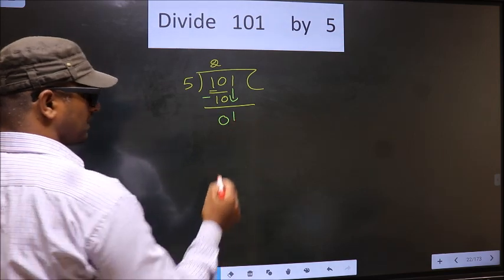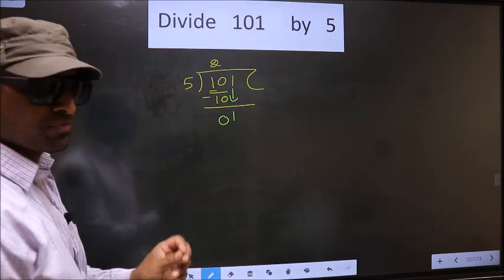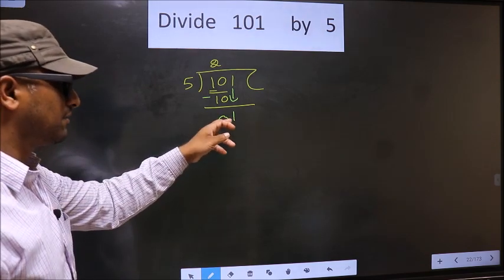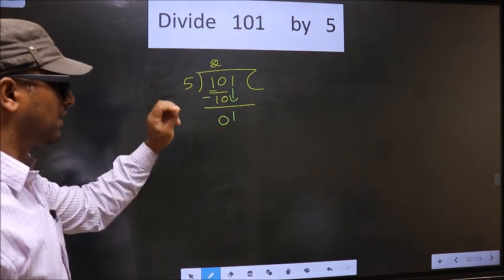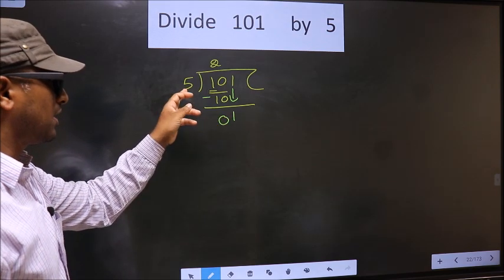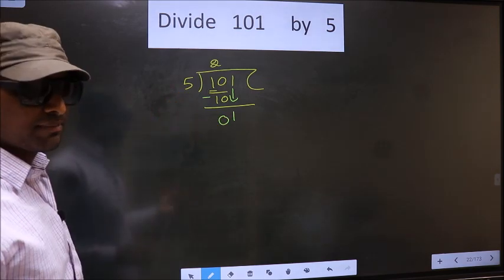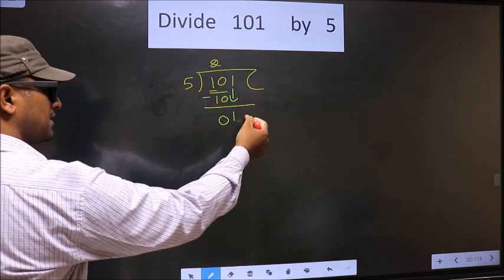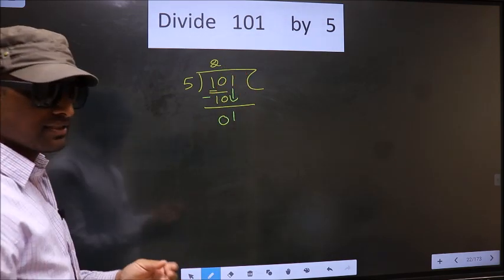This is where the mistake happens. Here we have 1, and here is 5. 1 is smaller than 5. So what many do is they put a dot and take 0 here, which is wrong.